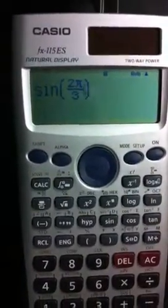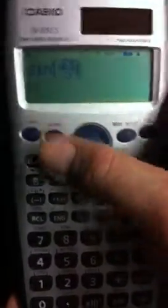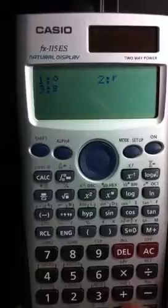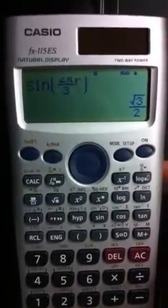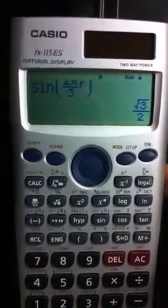The sine of 2 pi over 3, and maybe I want it in radians, so I'll use my DRG button here for radians. So shift, DRG, choose number 2 for radians, and it gives me square root of 3 over 2 in that case as well.